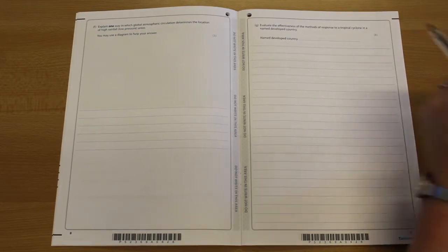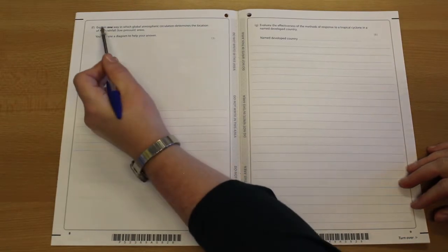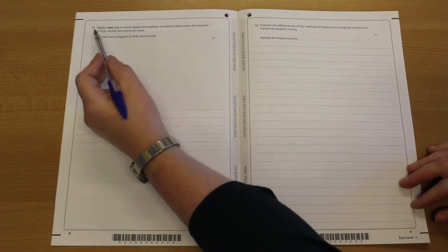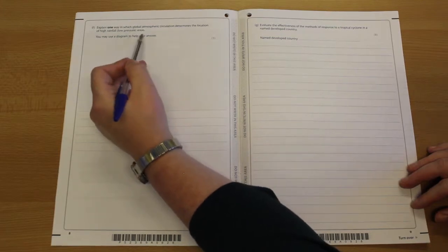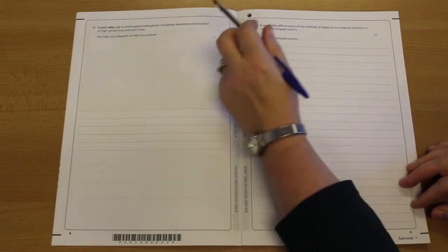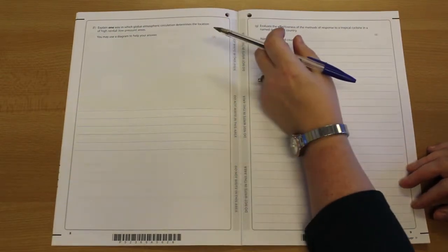Anyway, this was the pure evil question. Explain one way in which global atmospheric circulation determines the location of high rainfall, low pressure areas, three marks. You may use a diagram to help you, but there's also spaces to write.